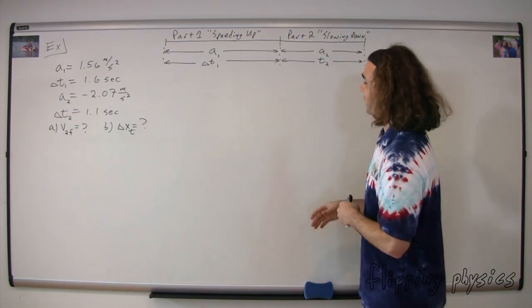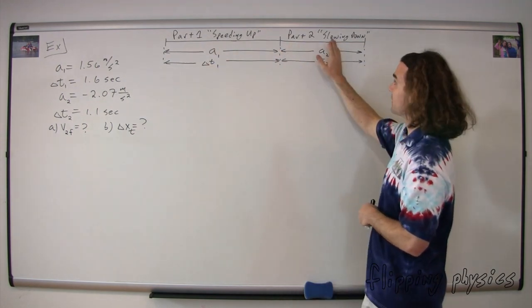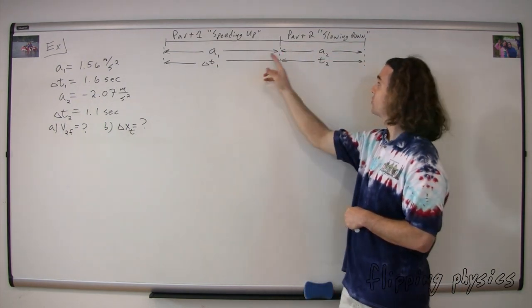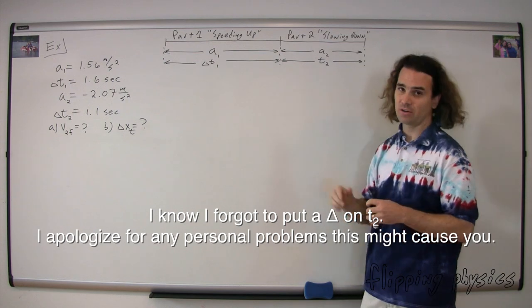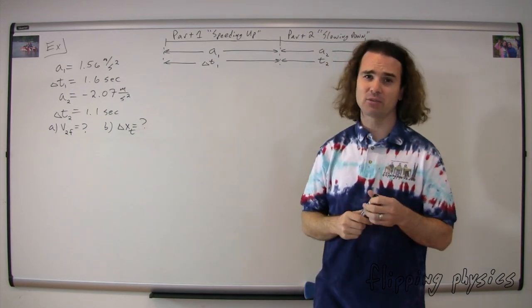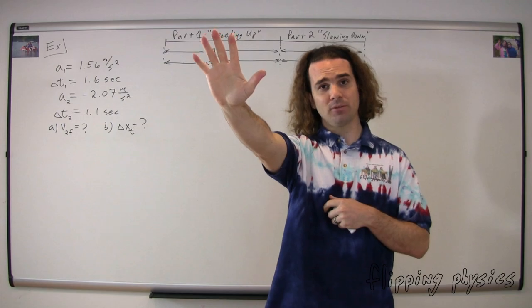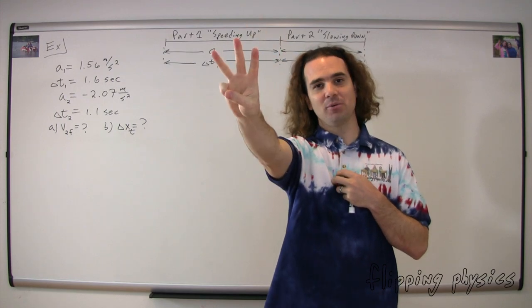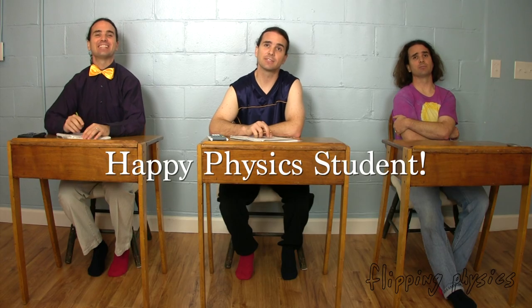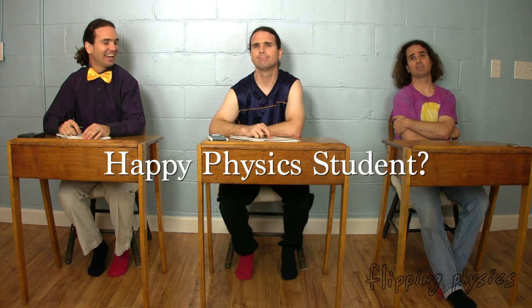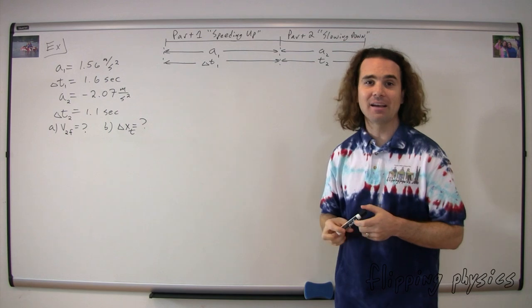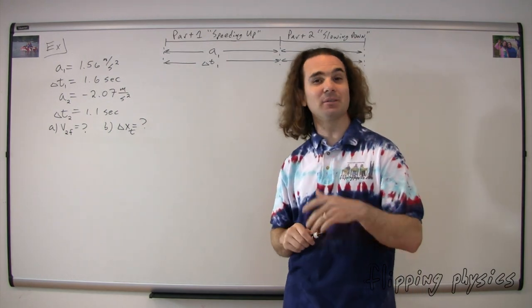Mr. P.: So at this point I usually draw a picture, and that kind of helps us understand what's going on. From our drawing you can see the part where we're speeding up is labeled part one, and the part where we're slowing down is labeled part two. I've listed the things we know for both parts — we know the acceleration and the change in time for both part one and part two. Let's review: there are how many UAM variables? Five. How many UAM equations? Four. If you know how many of the variables? Three. You can figure out the other two, which leaves you with one — happy physics student. Actually, that means we have a problem: we only know two of the UAM variables in each part, so we are actually missing a variable.